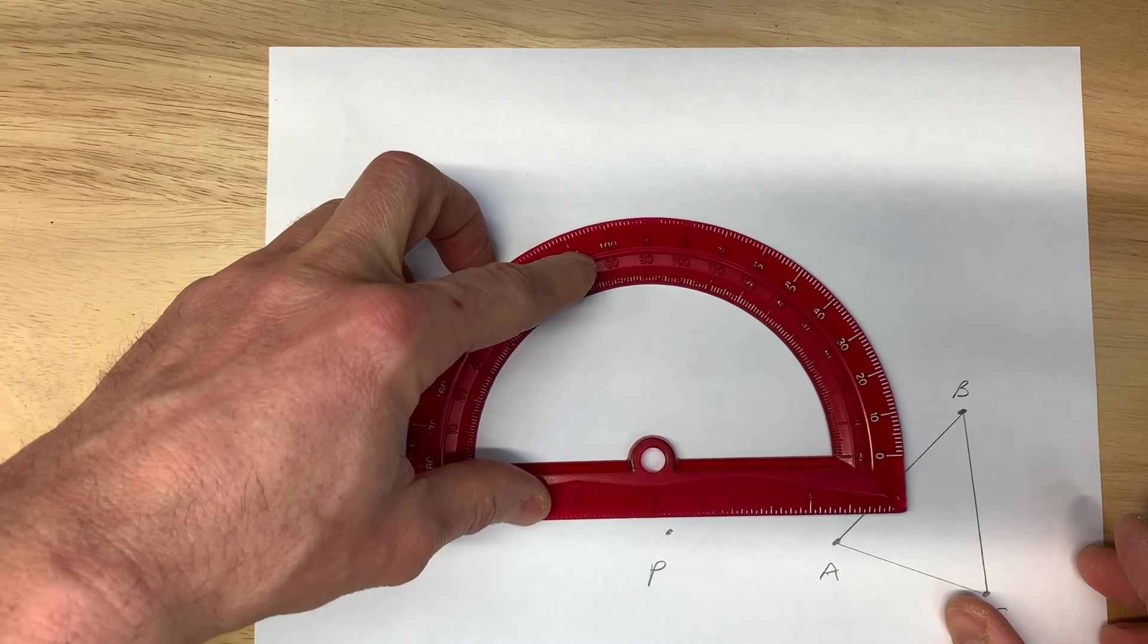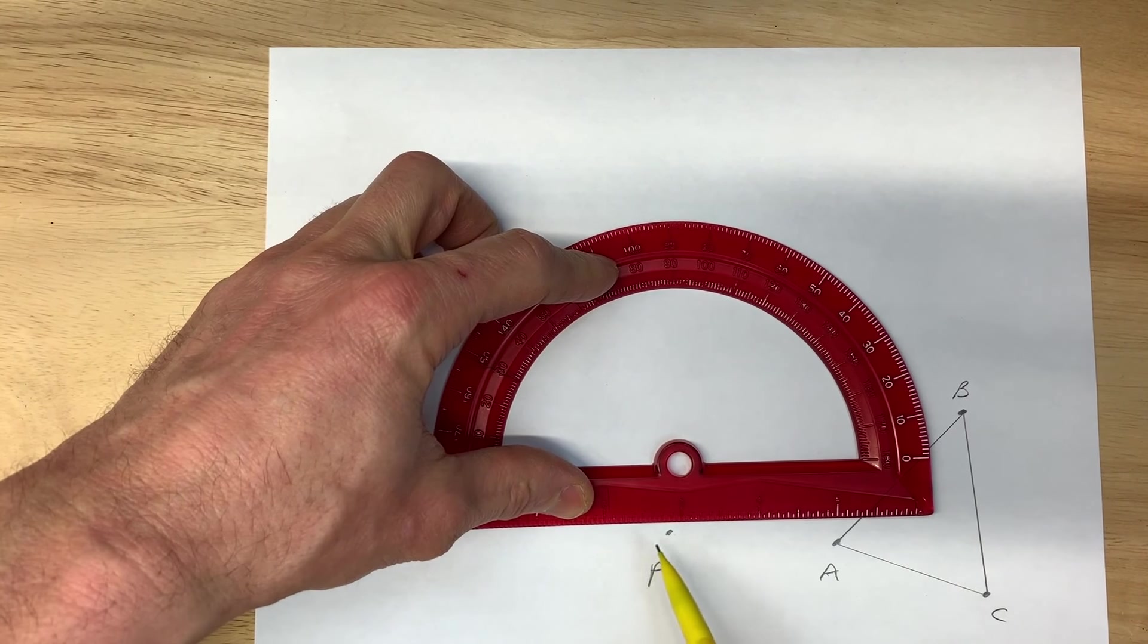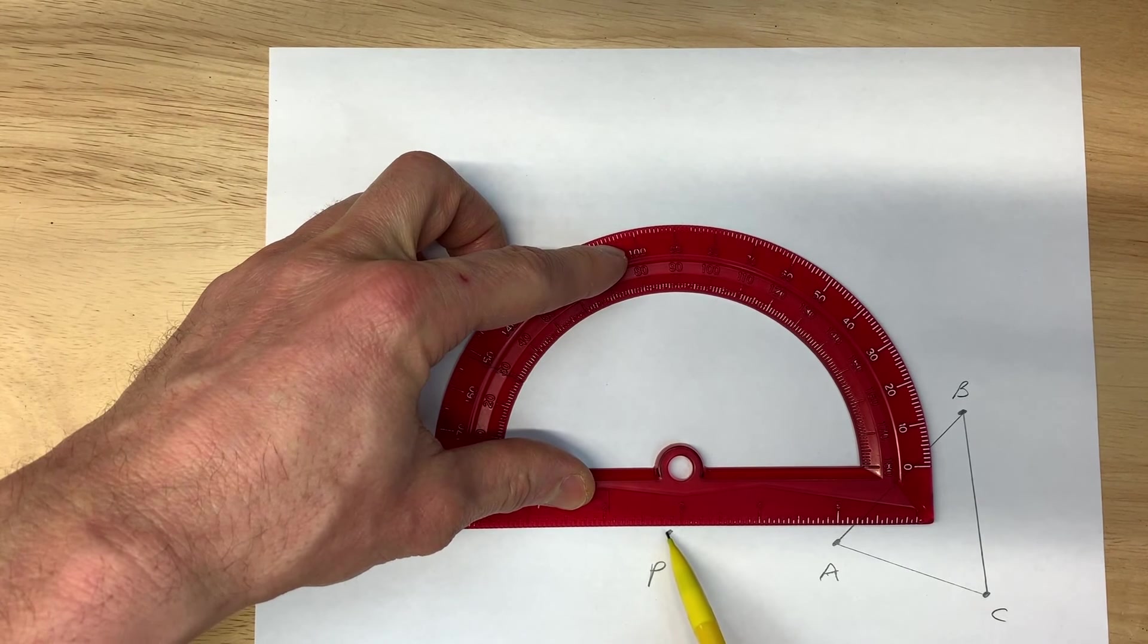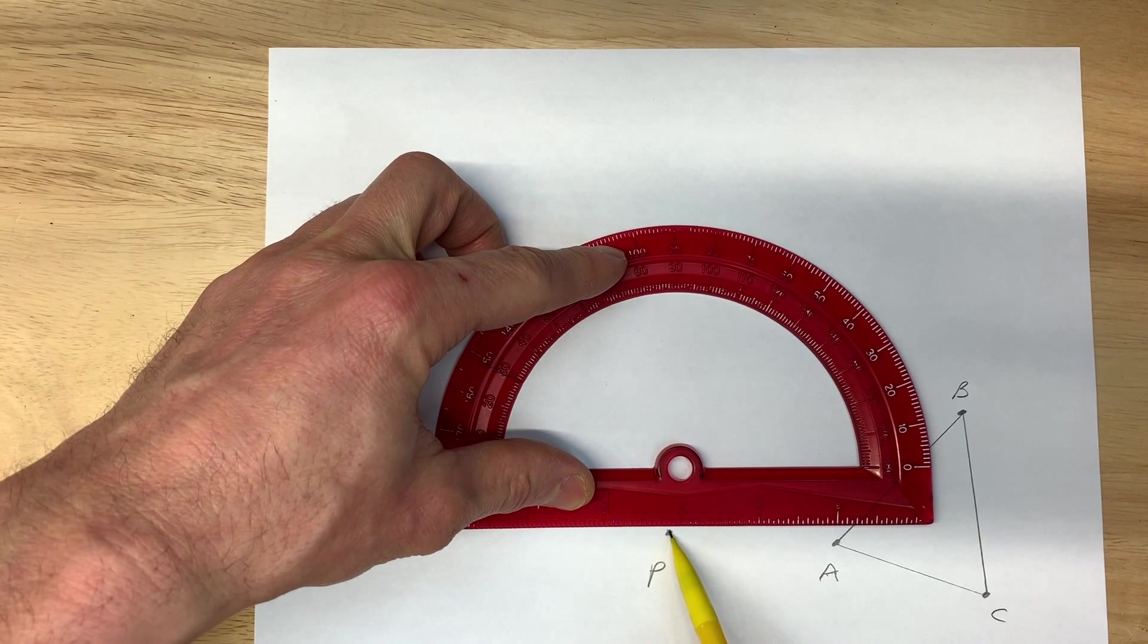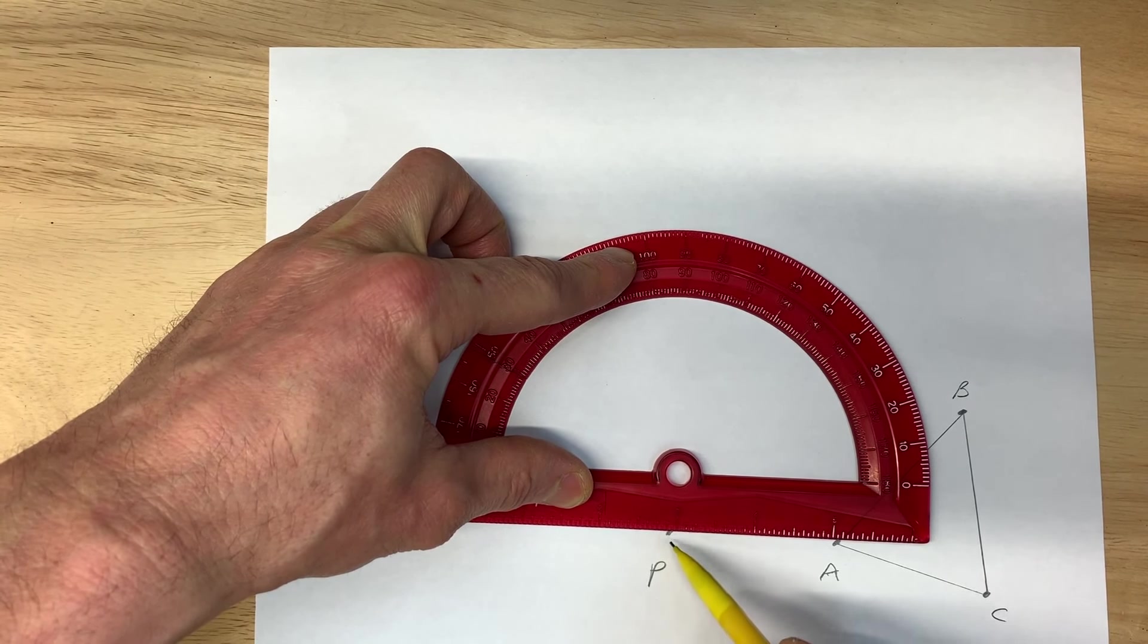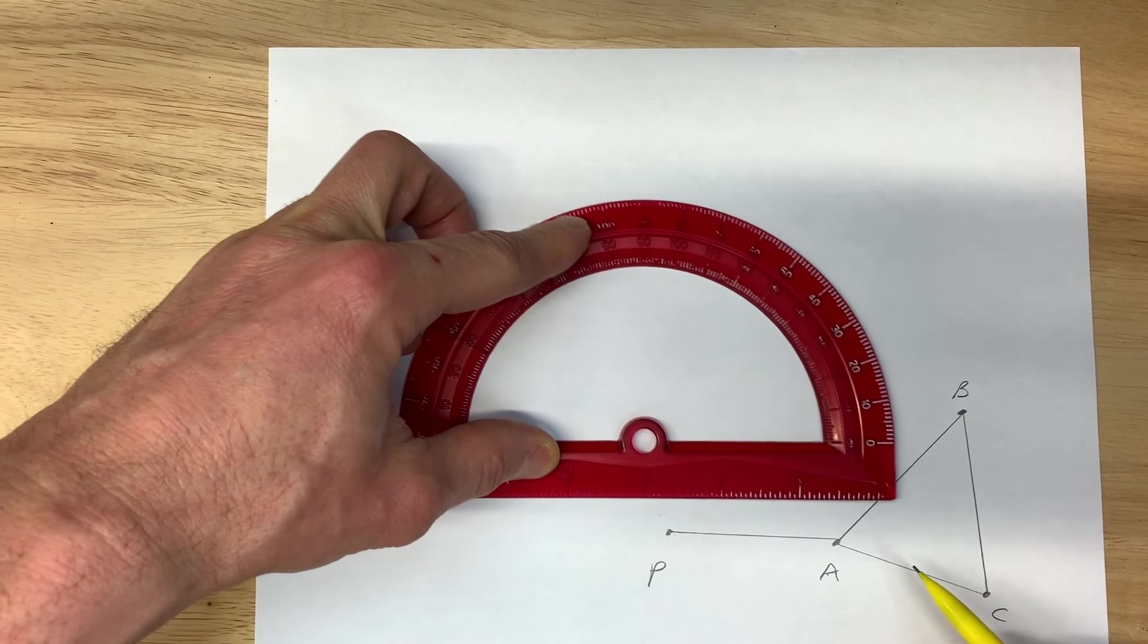First thing you want to do is draw some lines. We're going to start by drawing a line from the point that we're rotating about, point P, to vertex A. So I'm just going to start by drawing a line.